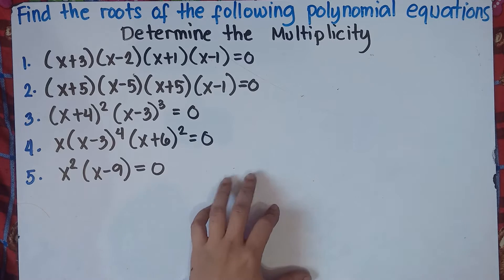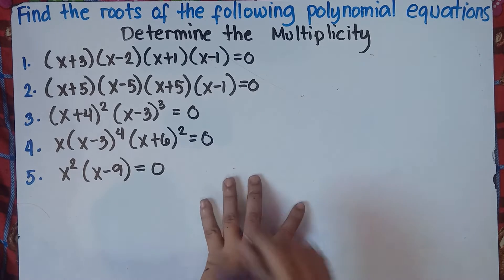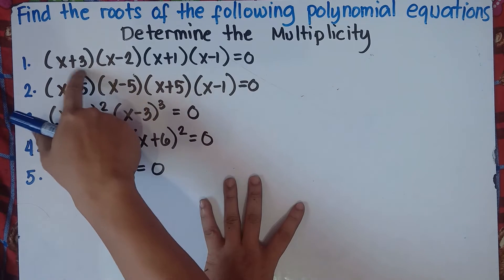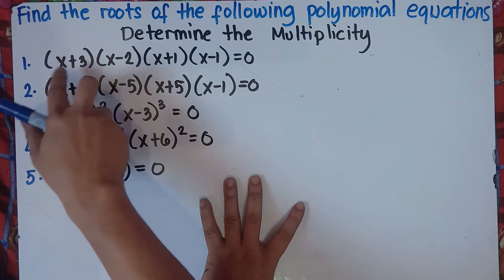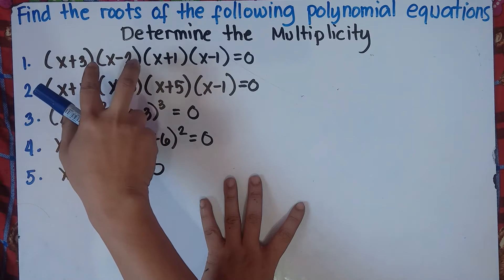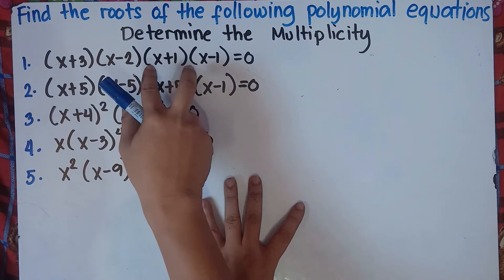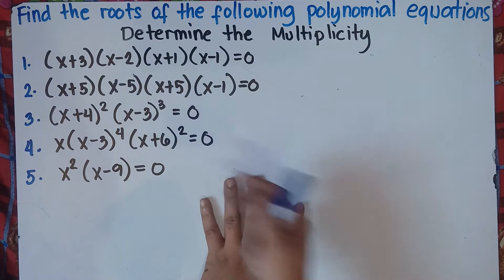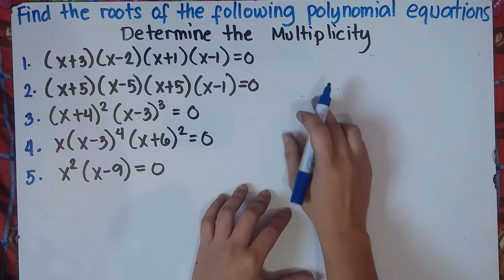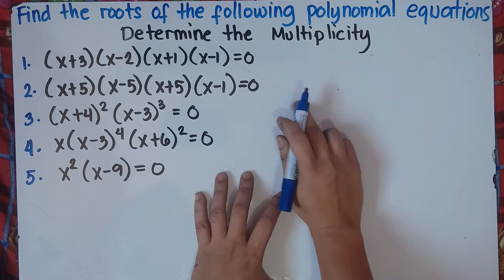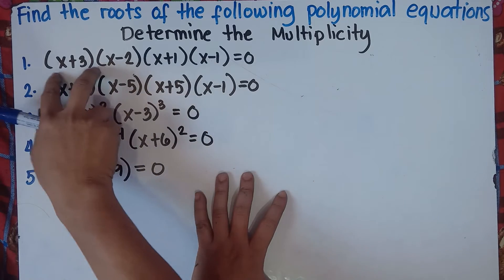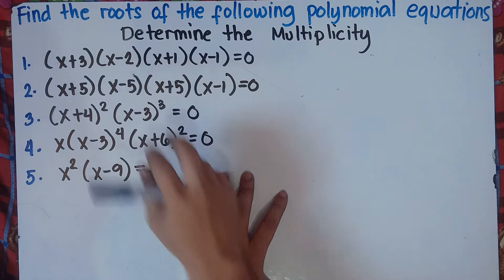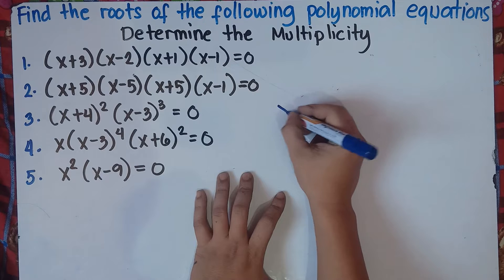For number one, to find the roots of this given equation — quantity x plus 3, quantity x minus 2, quantity x plus 1, and quantity x minus 1 — it's very easy. Just equate your equation into 0.